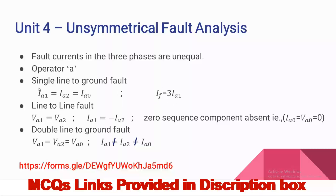For a line-to-line fault (double line fault), positive sequence voltage equals negative sequence voltage; importantly, zero sequence components are absent — I-a0 equals zero and V-a0 equals zero. The positive sequence current equals the negative of the negative sequence current — both currents are in opposite directions. For a double line-to-ground fault (line-to-line-to-ground fault), the sequence voltages are equal: positive equals negative equals zero sequence voltage. The currents are all different — positive sequence current is not equal to negative sequence current, which is not equal to zero sequence current.